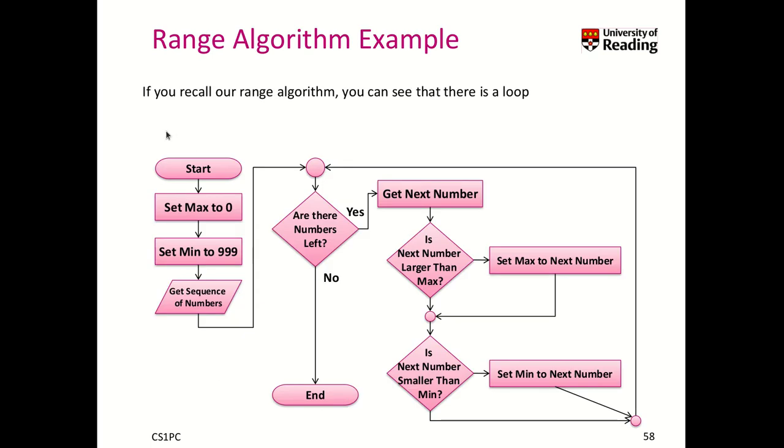Let's have a look back at our range algorithm example. We said here the range algorithm was there to determine from a set of numbers the maximum and minimum number. Therefore, we initialized the maximum to zero and the minimum to a very high number. And now, we basically walk through here all these numbers. As long as there are numbers left, we got the next number and then we updated min and max. This is in the strict sense a loop because as long as there are numbers left, you continue to process the next number.